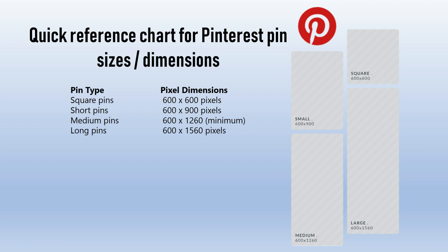For today's video I want to keep the tutorial series alive but change it up. I spend a lot of time creating images for Pinterest, and I wanted to share the differences in Pinterest pin sizes specifically. From the chart, there are four pin types: square, short, medium, and long pins. The pixel breakdown is: 600x600 for square, 600x900 for short, 600x1260 for medium, and 600x1560 for long pins.